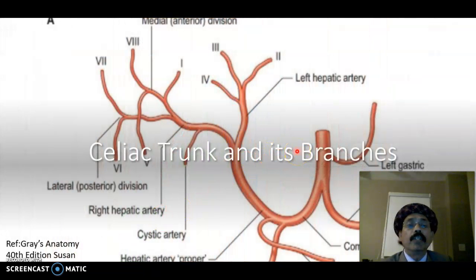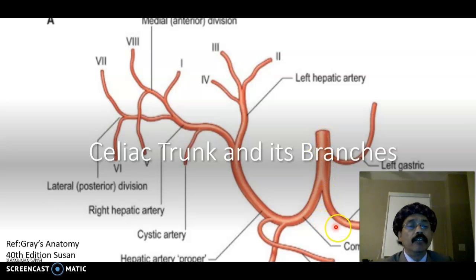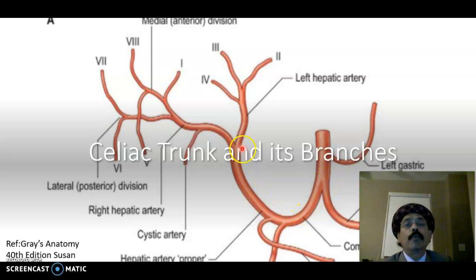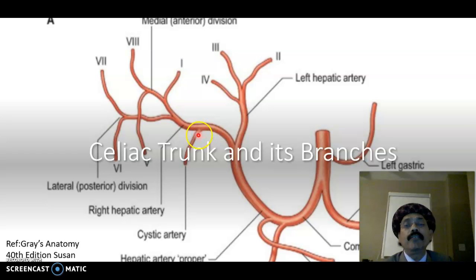Looking at the branches on the diagram: the celiac trunk gives off the splenic artery, left gastric artery, and common hepatic artery. The common hepatic artery continues as the hepatic artery proper, which divides into the left hepatic artery, right hepatic artery, and from the right hepatic artery arises the cystic artery for the gallbladder.